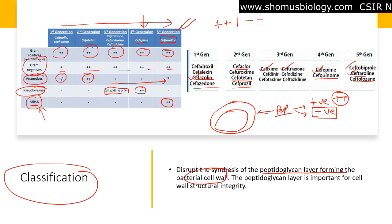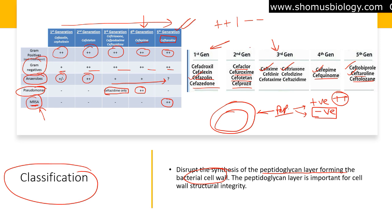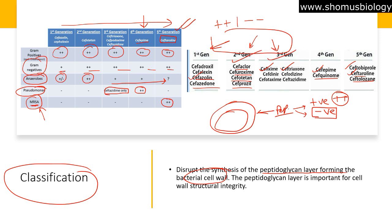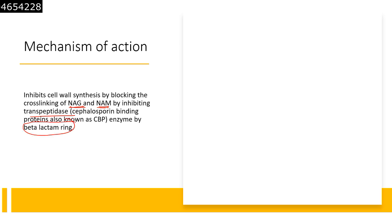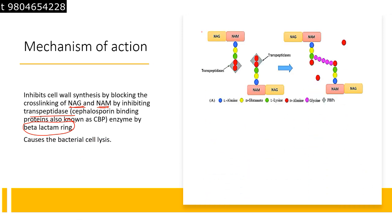Currently, first, second, and third generation cephalosporins are used most commonly against a broad-spectrum bacterial range. The mechanism of action is to inhibit cell wall synthesis by blocking the cross-linking of NAG and NAM by inhibiting the transpeptidase enzyme, facilitated by the presence of the beta-lactam ring.